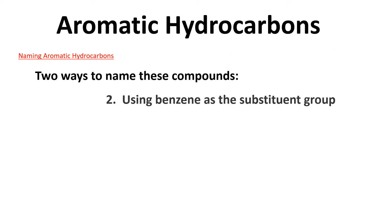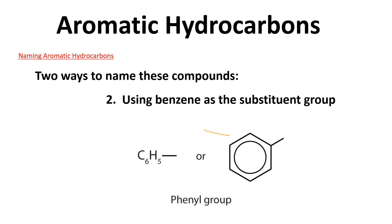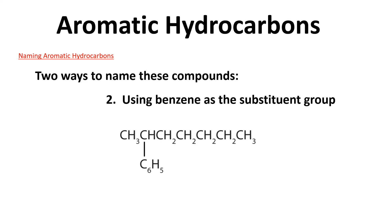The second way is to use benzene as the substituent group — this is called a phenyl group, and you have to be careful when you do this. Here's an example: you look at this molecule and you might ask whether to treat it as a benzene. Instead, count the carbons in the main chain — 1,2,3,4,5,6,7 — and note the phenyl group attached at carbon two. So it's 2-phenylheptane.